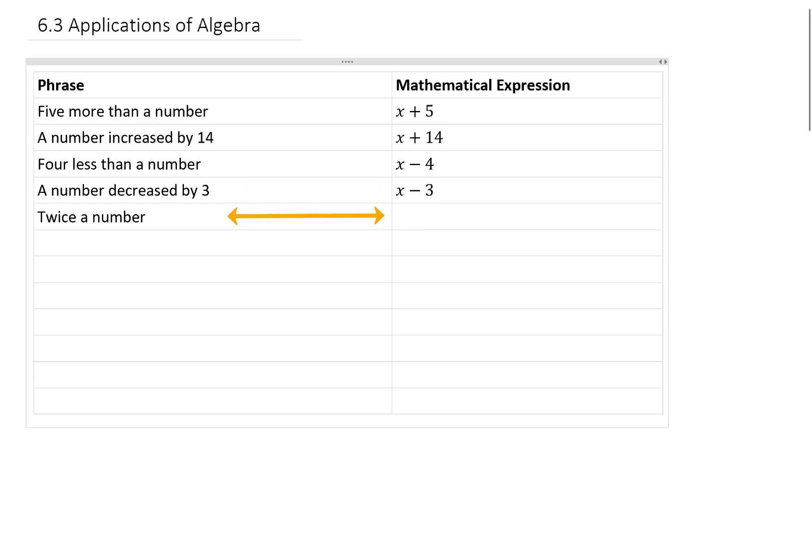If our phrase was twice a number, the word twice also means double. And if we take twice a number, that means 2 times that number. So that expression would be 2 times x.